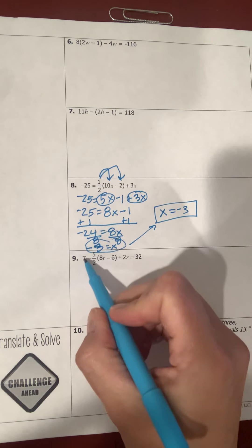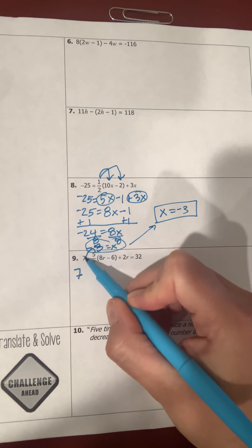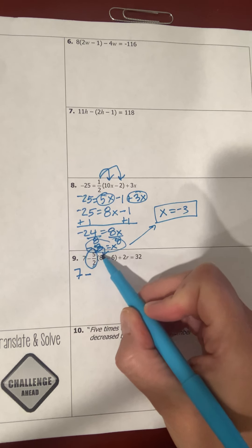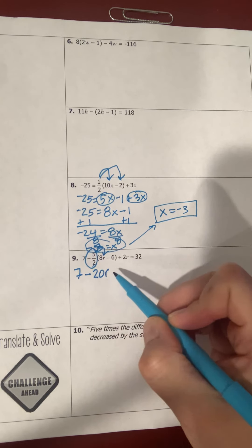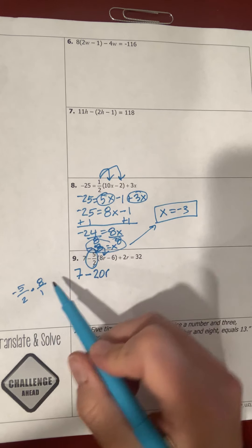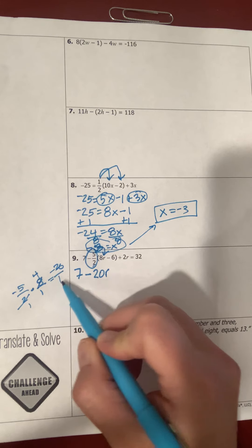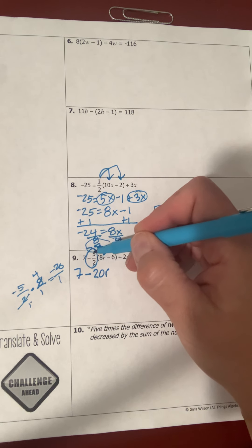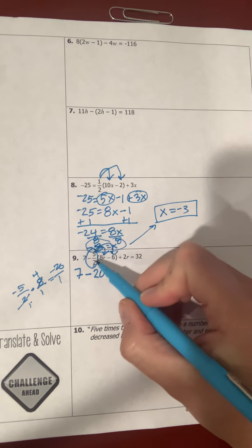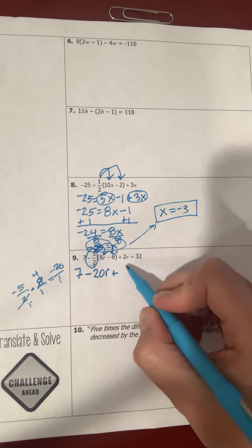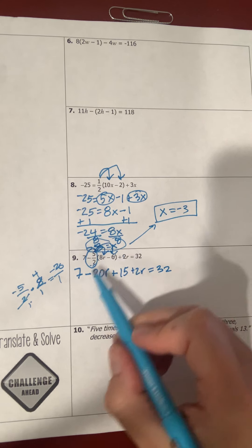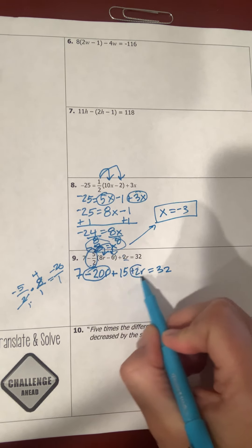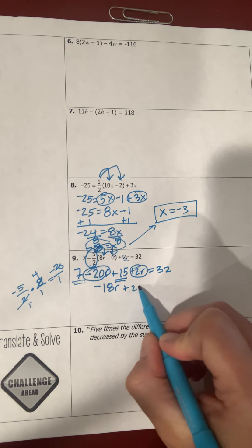For number 9, I keep 7 and distribute negative 5/2. Negative 5/2 times 8r: I cross-reduce 2 and 8 to give 4, so 5 times 4 is 20r — that gives negative 20r. Then negative 5/2 times negative 6: negative times negative is positive, 2 and 6 cancel to 3, and 5 times 3 is 15. So I've distributed negative 5/2 to both 8r and negative 6.